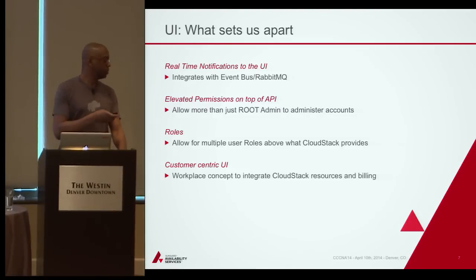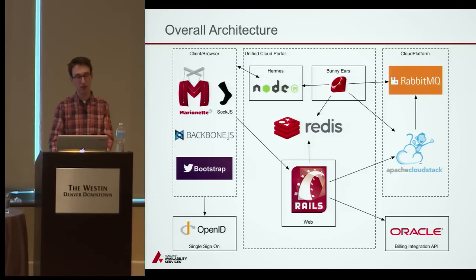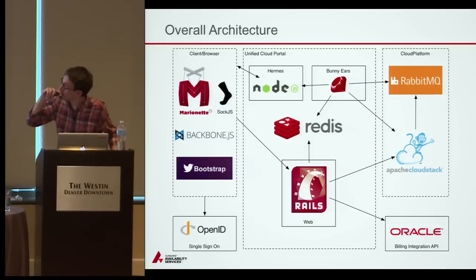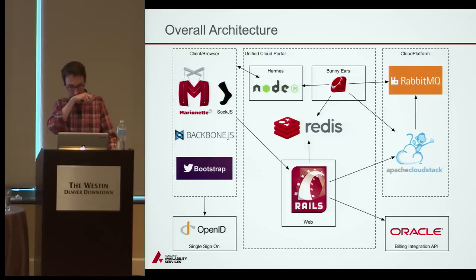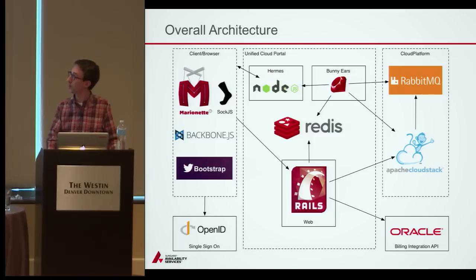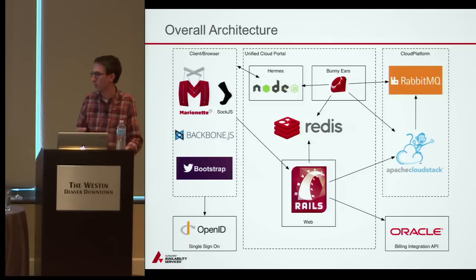I'm going to turn it over to Dave, who will talk about the technical components. On the client side — Chrome, Firefox, Internet Explorer — we're using Twitter Bootstrap, Backbone.js, Marionette.js, and Sock.js for WebSockets. In the bottom-left we have an OpenID server for single sign-on, integrating with something SunGuard already uses so users don't need to remember another username and password.